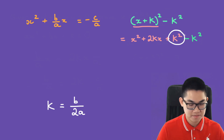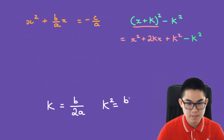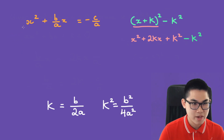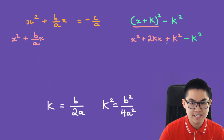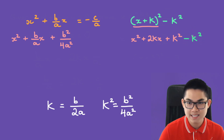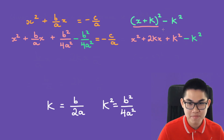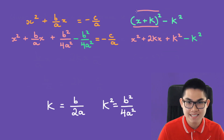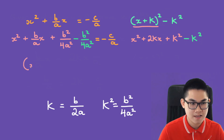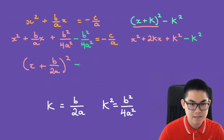What is k squared going to be? Well, k is b over 2a, so k squared is b squared over 4a squared. Now let's write what we have: x squared plus b over a times x, plus k squared which is b squared over 4a squared, minus b squared over 4a squared — and this is exactly the same as plus 0 — is equal to negative c over a. This part gives us x plus k, where k is b over 2a, to the power of 2, minus b squared over 4a squared, equal to negative c over a.